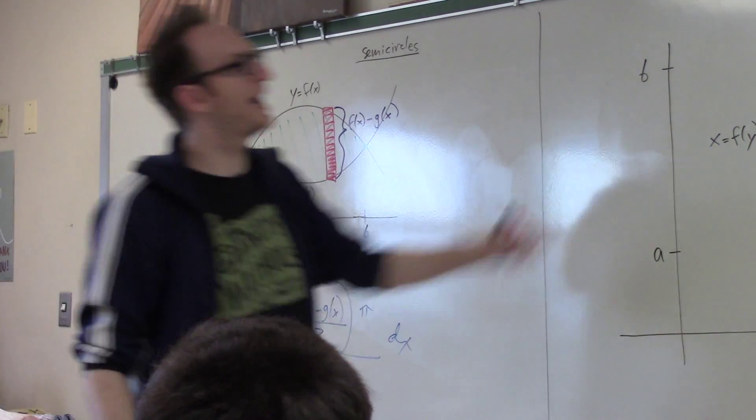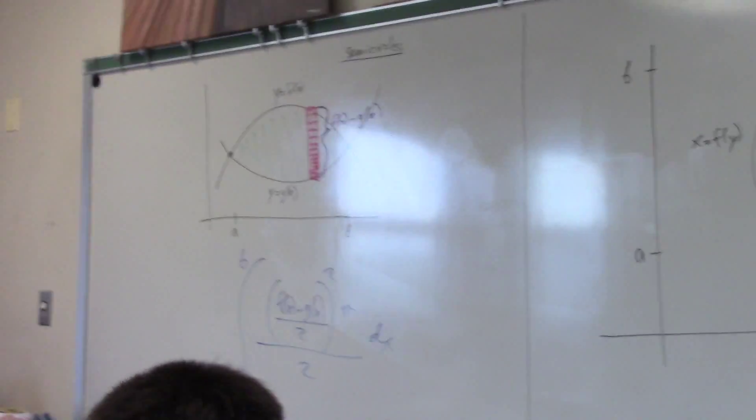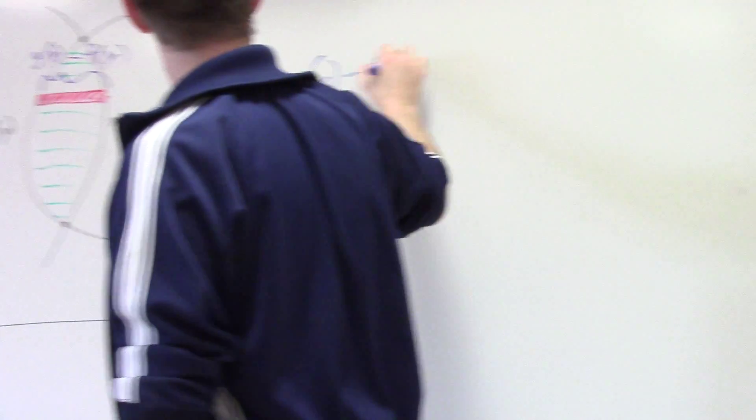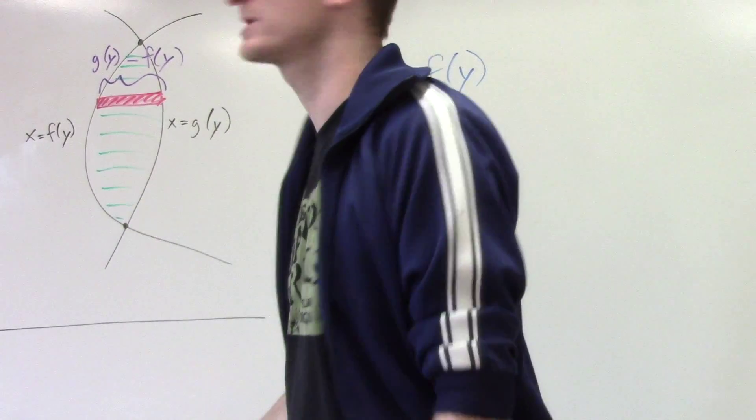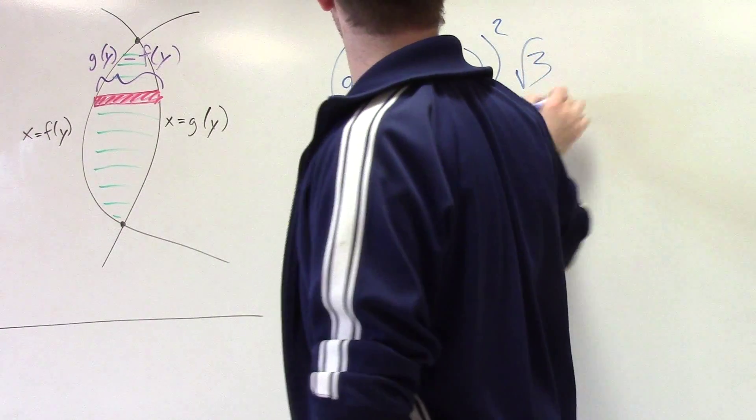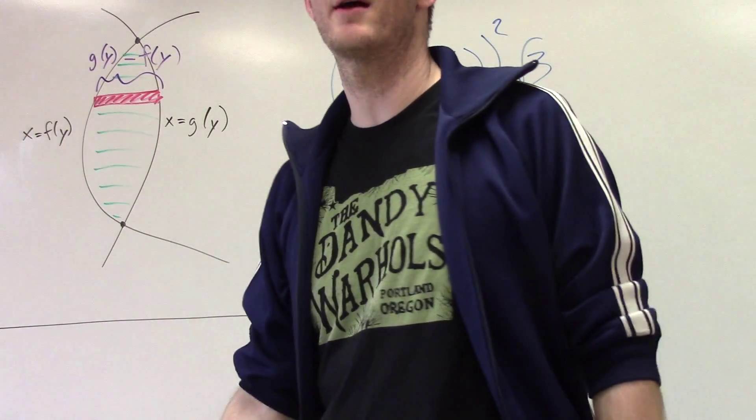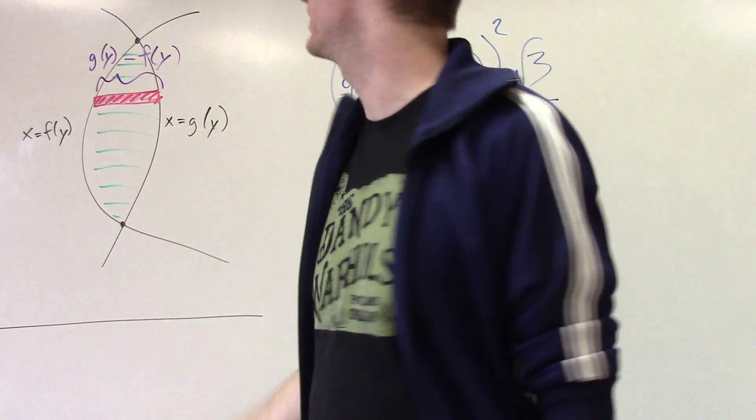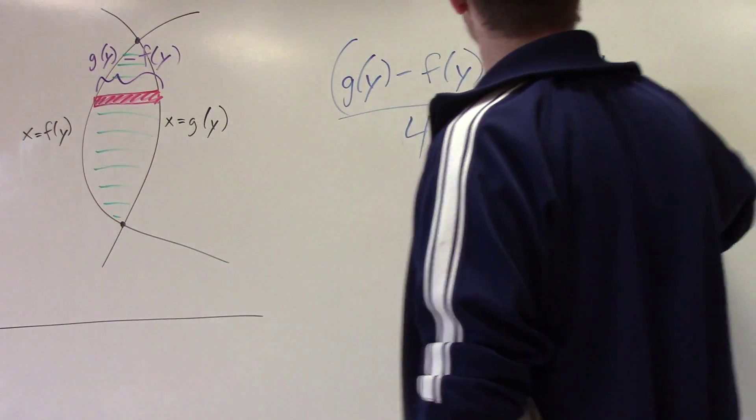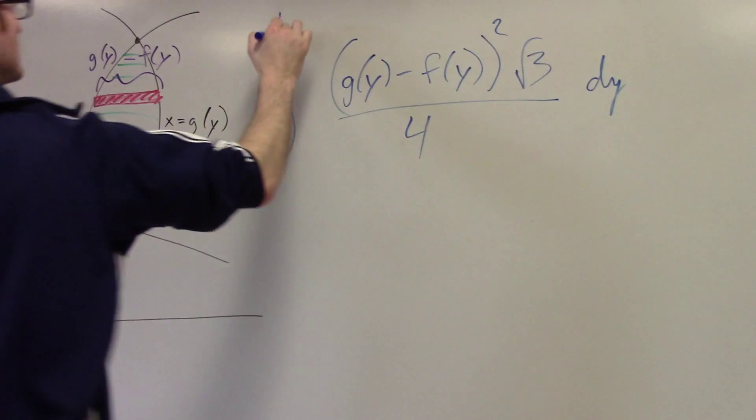Similar thing going on over here. Now, I'm doing it with respect to y. So, I take the length of that thing and we just made this happy formula a couple days ago that if you take this square root 3 over 4, that that is the area of an equilateral triangle. Give it a little thickness and integrate from a to b.